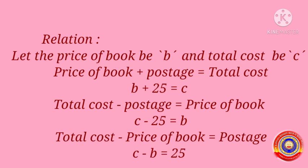Next, total cost minus postage is equal to price of book, so we can write the relation as C minus 25 is equal to B. Another relation: total cost minus price of book is equal to postage, that is C minus B is equal to 25.